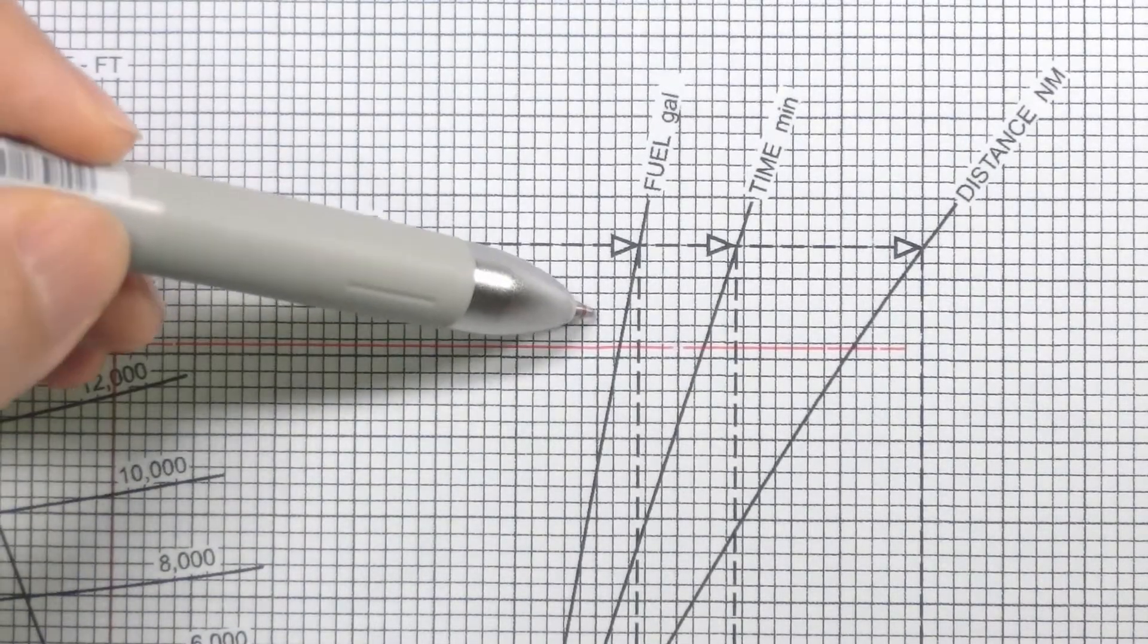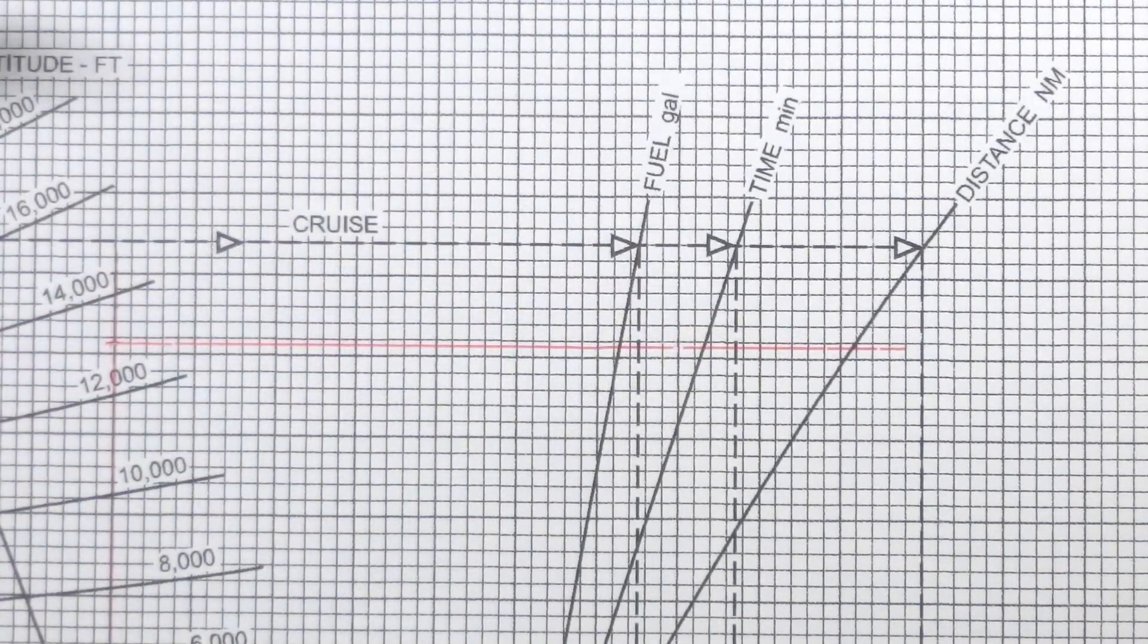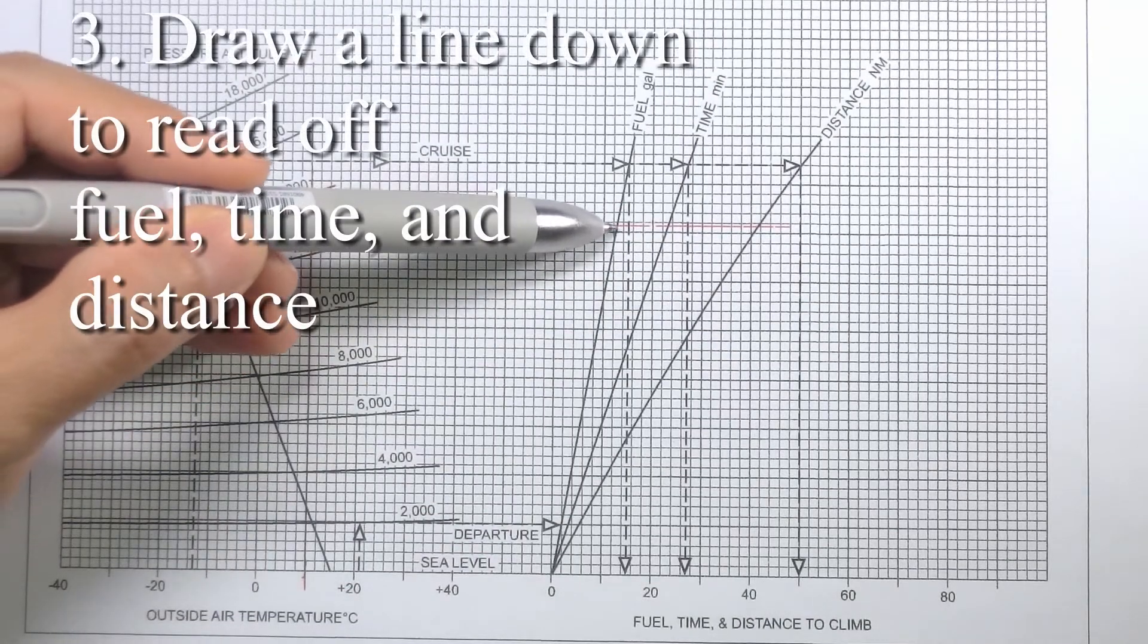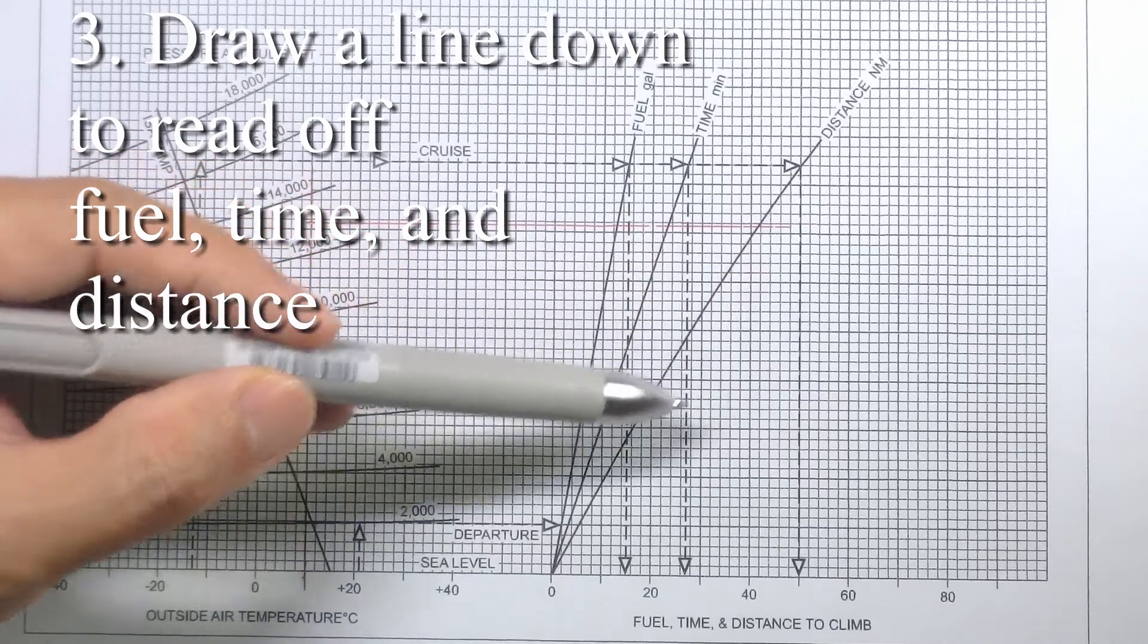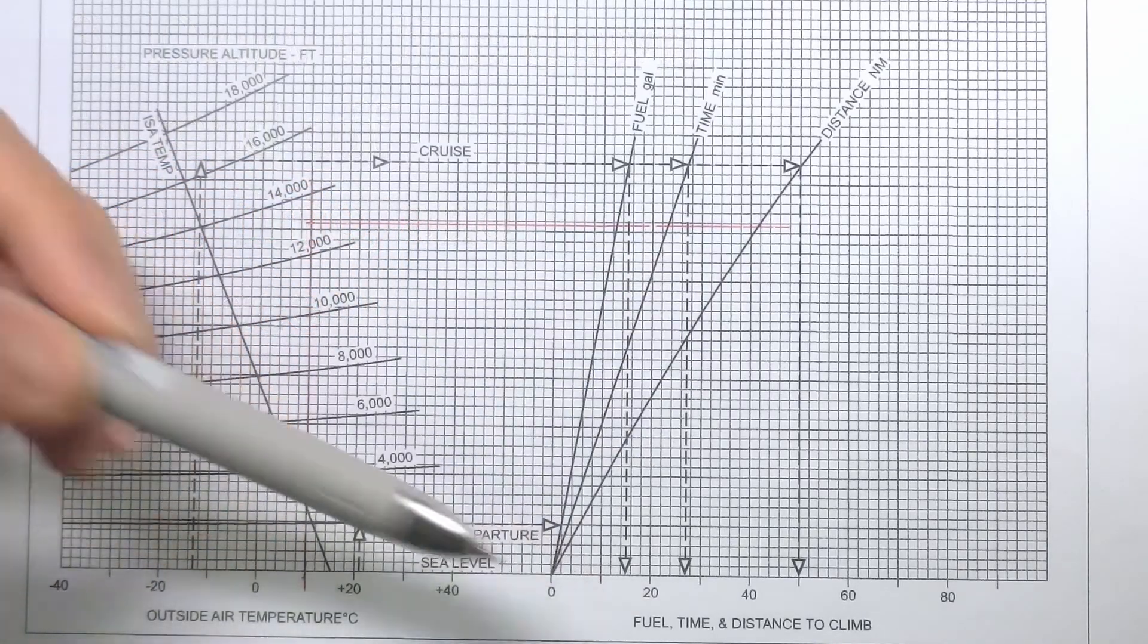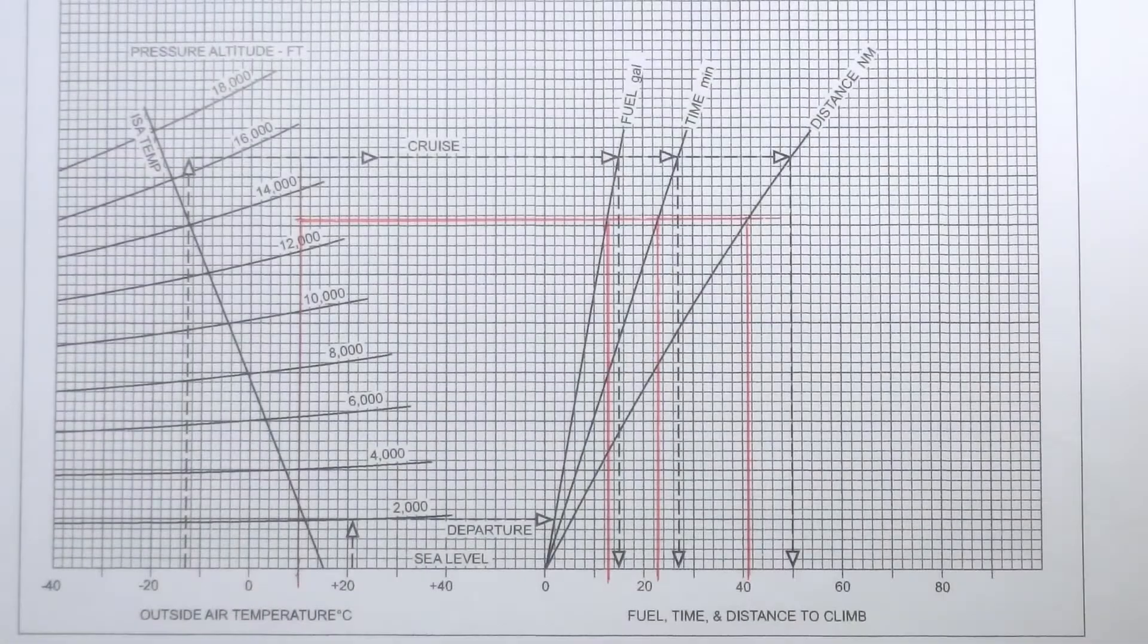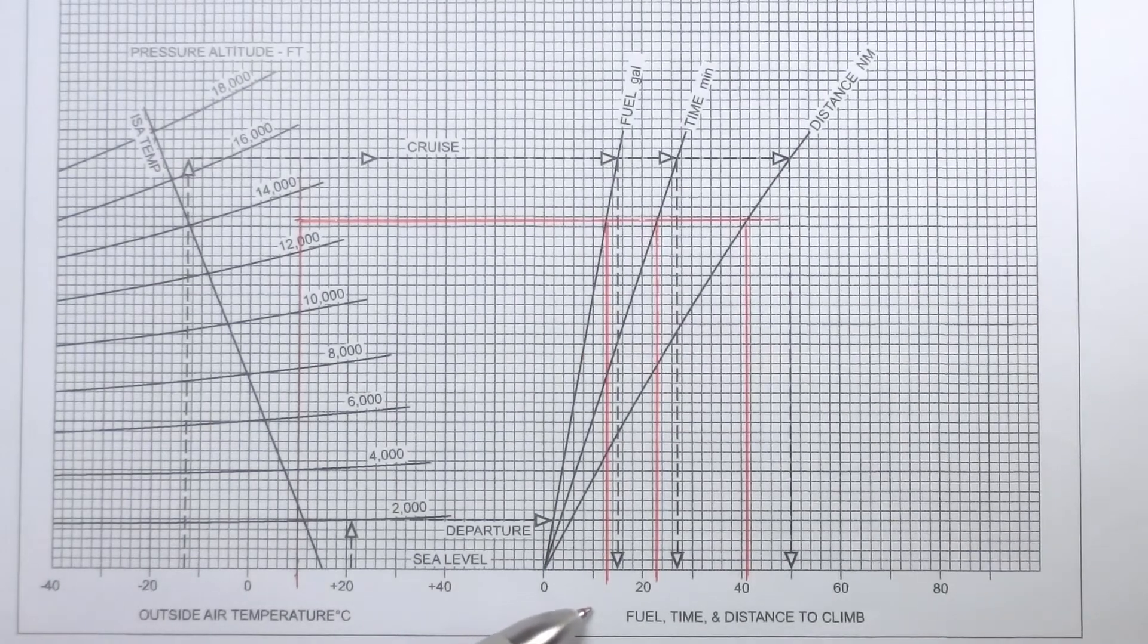And it should look something like this. So this is the second step and the final step would be to draw a line straight down from fuel time and distance to the scale at the bottom of the chart.